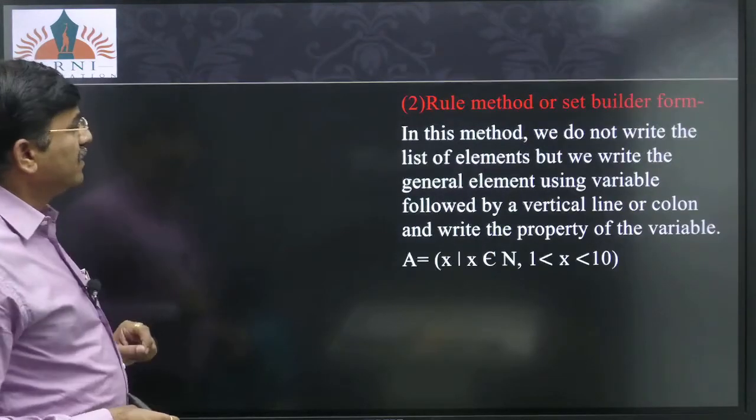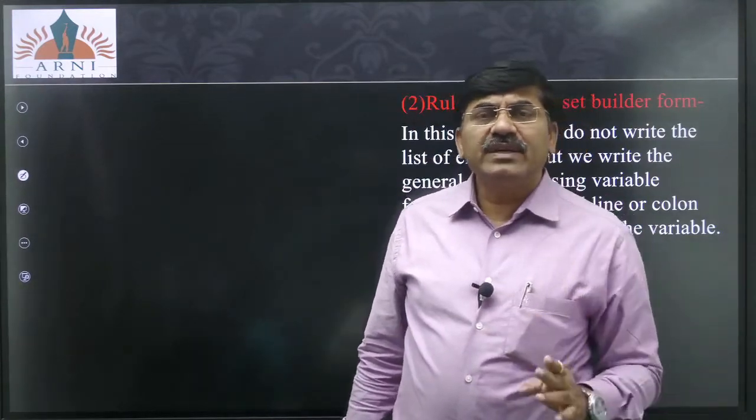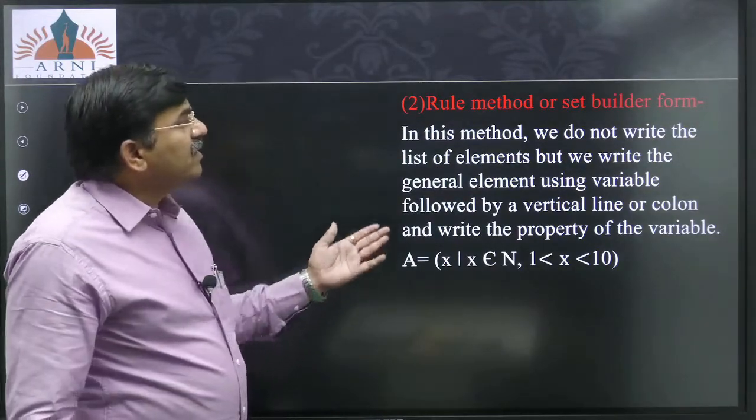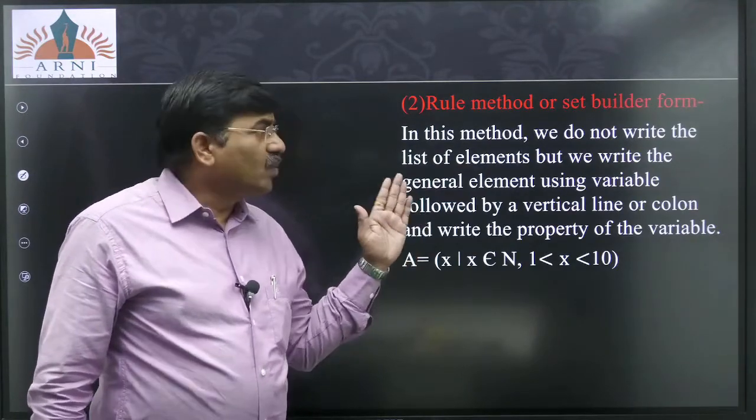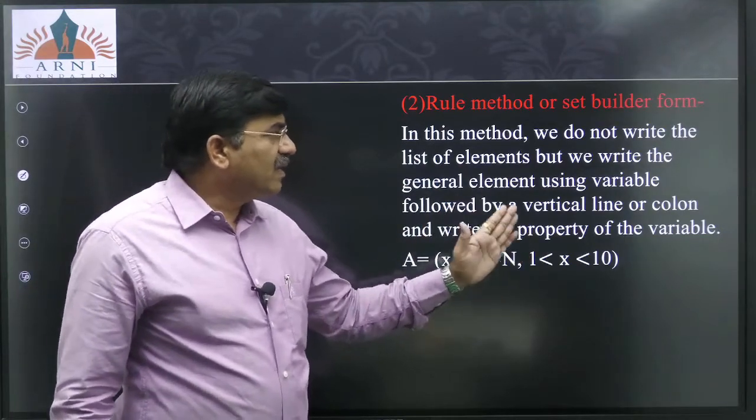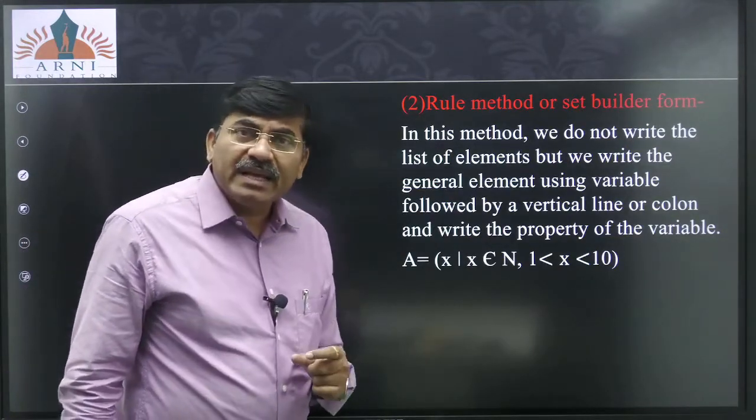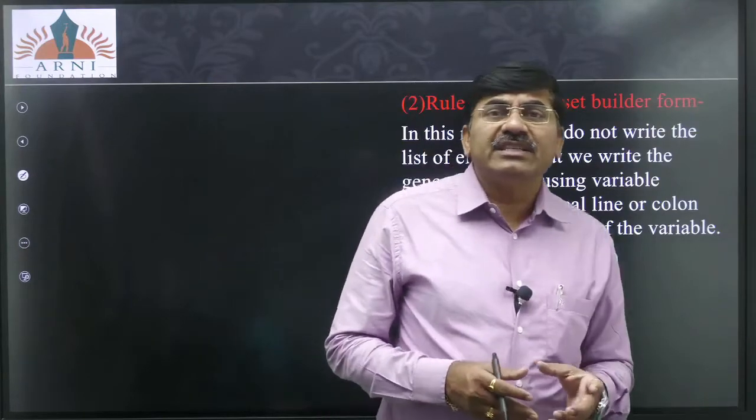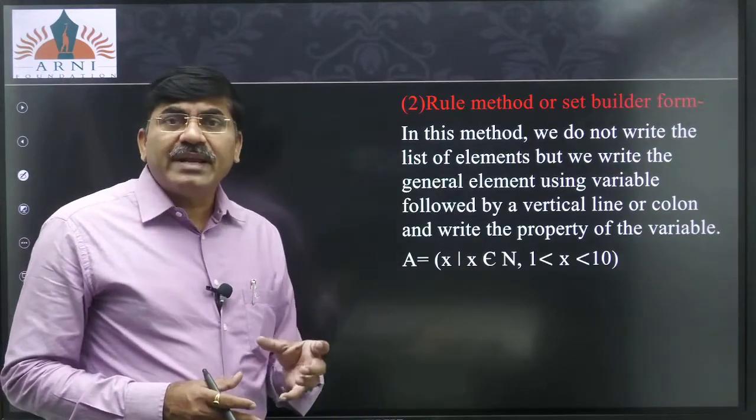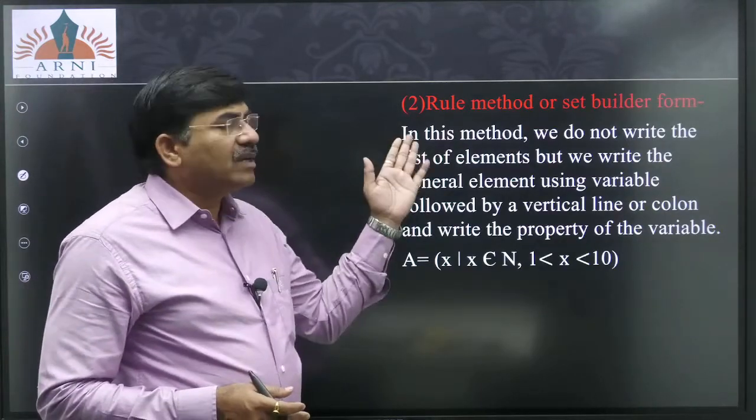Now the next thing, this is the second method. There are two methods of writing the sets, the first one is listing method and second one is a rule method. In this rule method we do not write the list of elements. We write the general element using variable followed by vertical line or colon and we will write the property of the variable. We have to write the property under which that all elements comes together. So this is called as rule method.